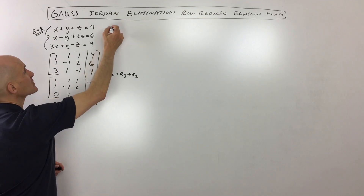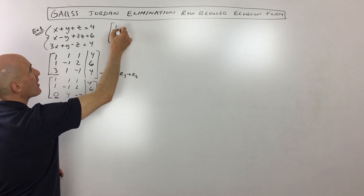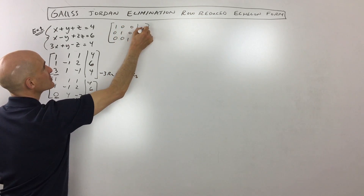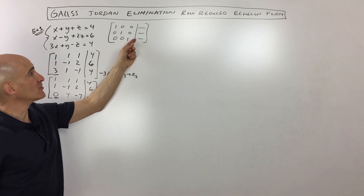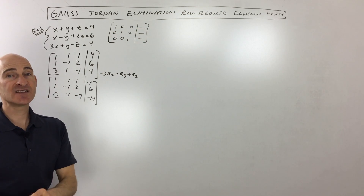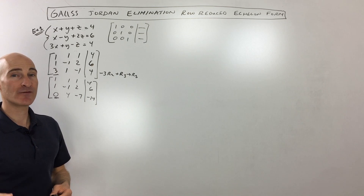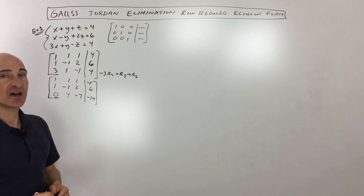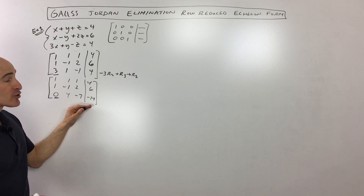Just to tell you where we're heading with all this — what we really want is zeros here, here, and here. We want 1s on the diagonal and zeros in the upper right, so our answers will be right there. That way we'll have z equal to blank, y equal to blank, and x equal to blank. If you want to see this on the calculator, I'll show you at the end of this video how to do row reduced echelon form using your TI-83 or TI-84. We're going to go through two examples.